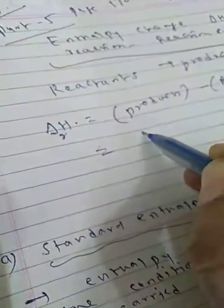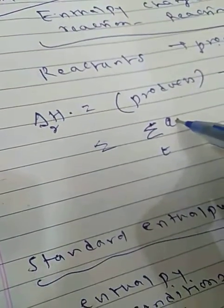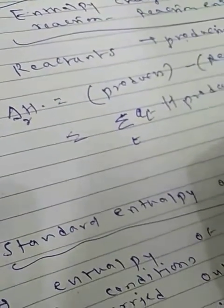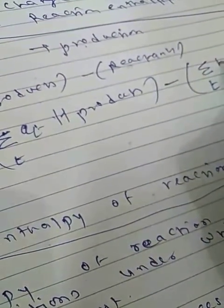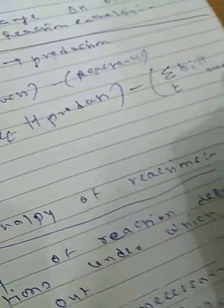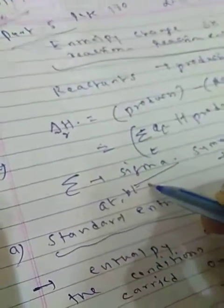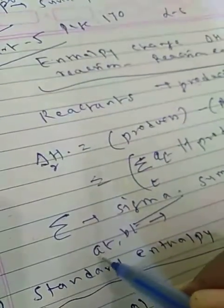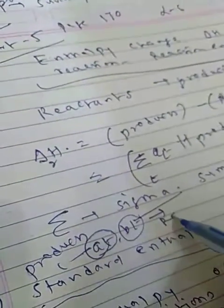How will you represent sigma at a given temperature? We write sigma for products — A times Hm for products — close the bracket, minus sigma at a given temperature B times Hm for reactants. Sigma means summation, means total. A and B are stoichiometric coefficients of the products and reactants respectively.